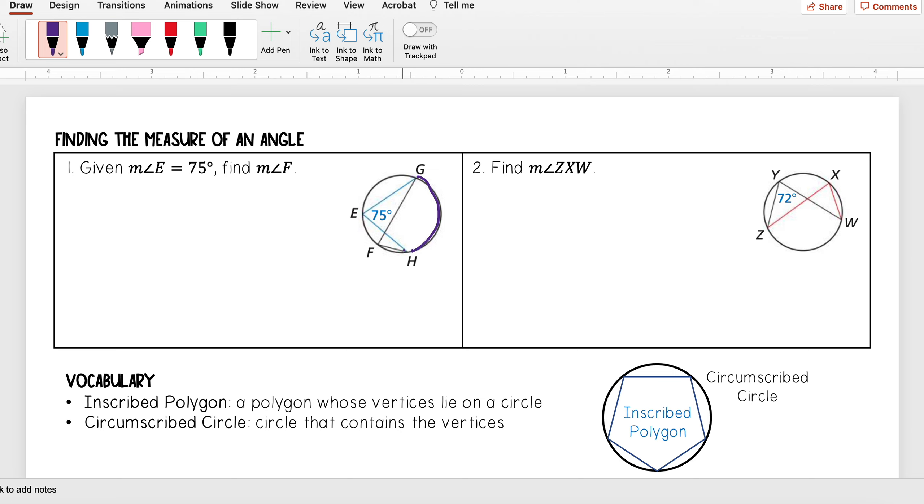I see that angle F intercepts the same arc, so that means angle F is congruent to angle E by the theorem we just talked about. That means the measure of angle F is equal to 75 degrees.